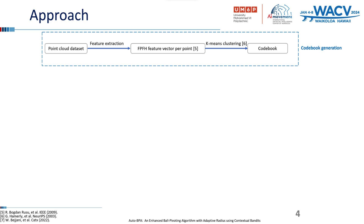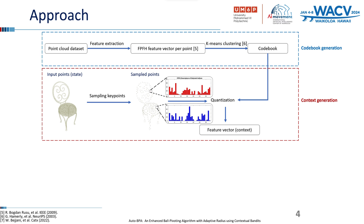These cluster centers form the foundation for generating feature vectors for each point cloud. In the context generation step, we select 100 key points uniformly distributed for each point cloud in the dataset. For each sampled point, we find the nearest cluster center using a gradient distance and assign the cluster index to the sampled point's feature vector. The combined sequence of cluster indices results in the generation of the feature vector, which is then normalized. These normalized feature vectors serve as the input for the subsequent phase.